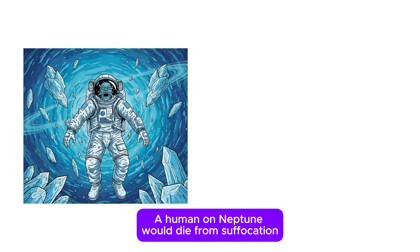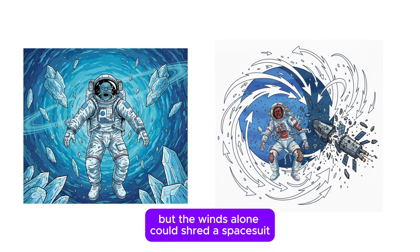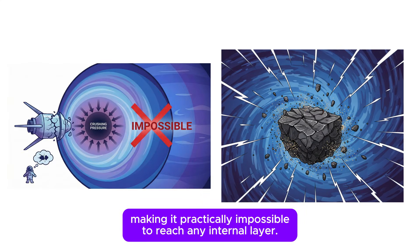A human on Neptune would die from suffocation and freezing, but the winds alone could shred a spacesuit before the freezing process completes. In its deep layers, pressure reaches levels that would crush even the hardest metals, making it practically impossible to reach any internal layer.